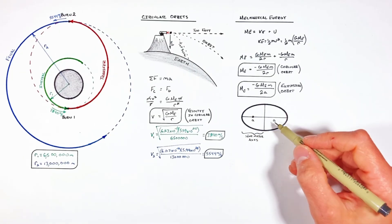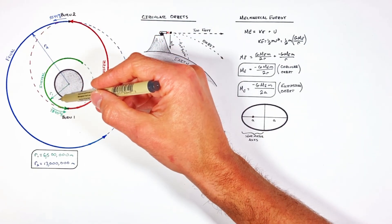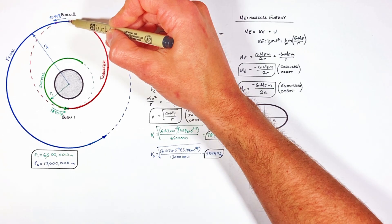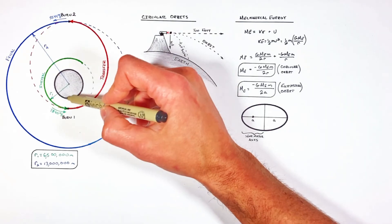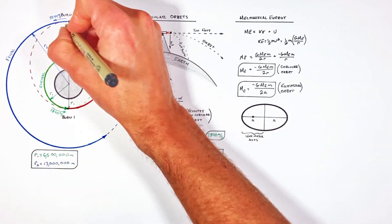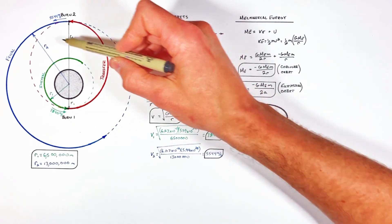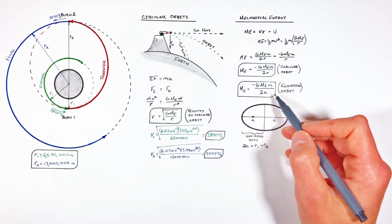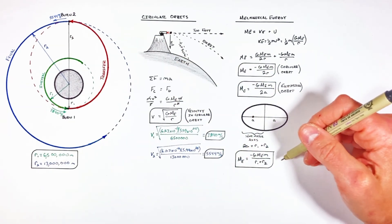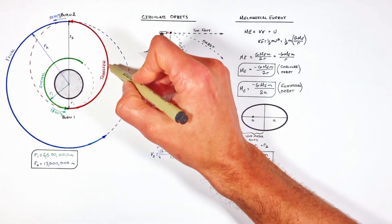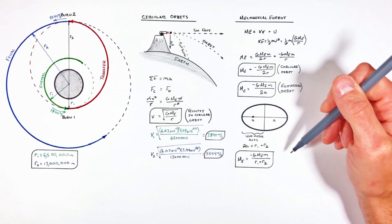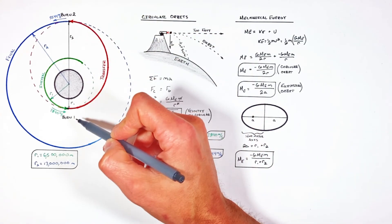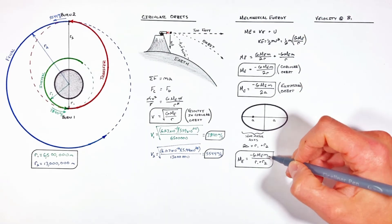There's something critically important to recognize about the geometry of this ellipse. The distance from burn one to burn two lies along the major axis of the ellipse. If you add together the radii of the inner orbit and the outer orbit, the total length of the major axis equals simply the sum of those two radii. Substituting this into our equation for the energy of an elliptical orbit gives us the total mechanical energy of the satellite at any point along the transfer orbit.